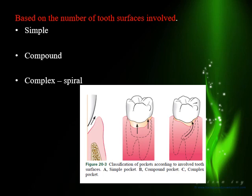A third situation is a complex pocket. The pocket starts on the proximal surface and tunnels through the bone onto the buccal surface. It involves two surfaces, but if you put your probe on the proximal surface you can probe it, whereas on the buccal surface you cannot. A complex pocket starts on one surface and ends on another, and can tunnel around the tooth to involve the other proximal surface as well — it can be probed only from one surface.